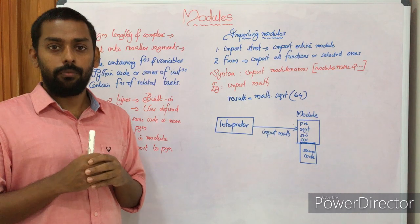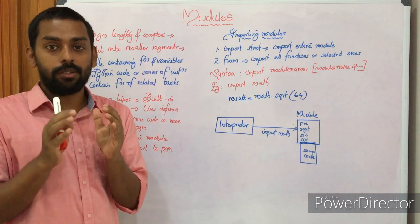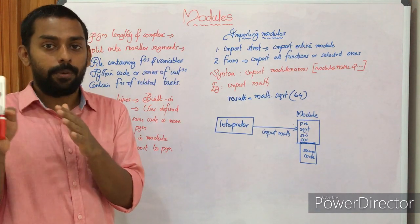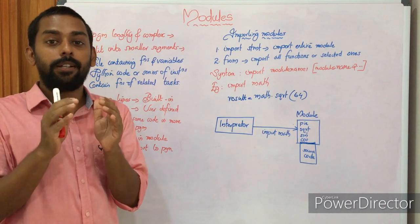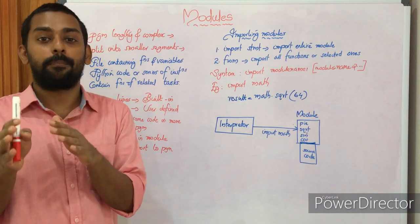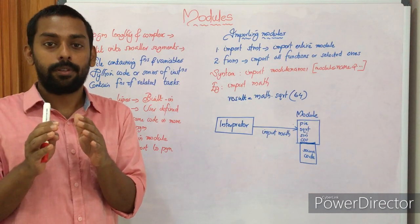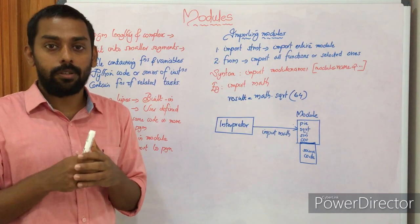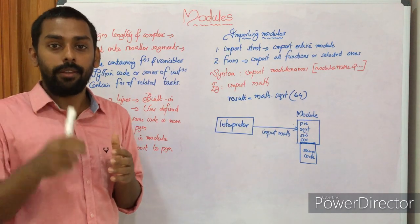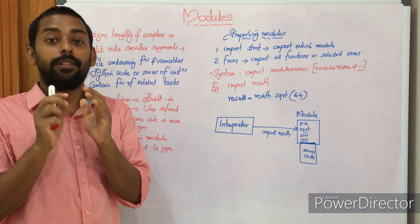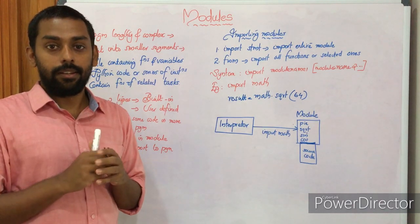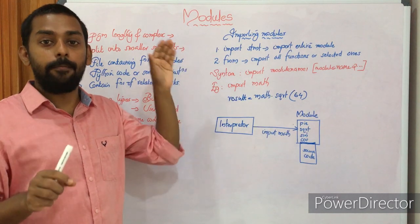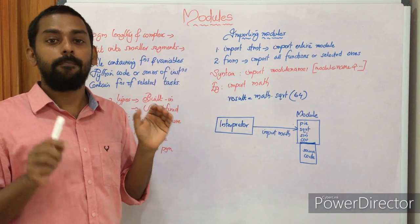Actually, what is a module? We know we have a process called modularity. When we get a problem, a problem may be somewhat complex or lengthy, and we divide the problem into sub-problems, again into sub-problems. That process is called modularity — that division and conquer process. We are dividing the problem just to solve it easily. So modularity is a process, and module is the final product in modularity.